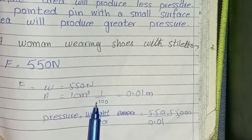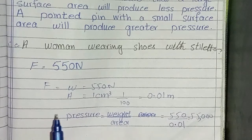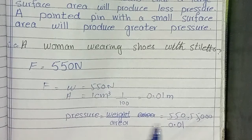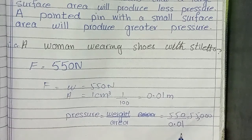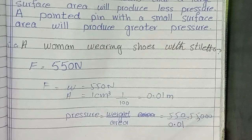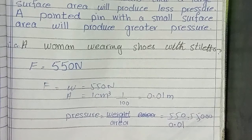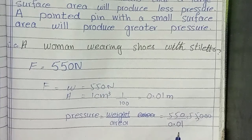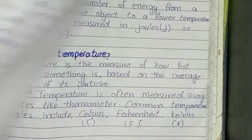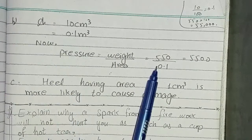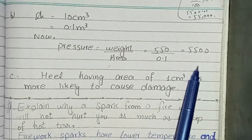Question number five, part (a): the answer is 1/100. Part (b): using Pressure = Force ÷ Area, the answer is 5500.